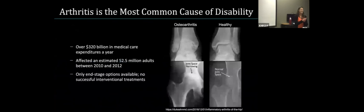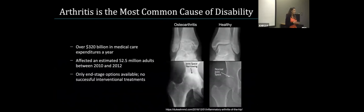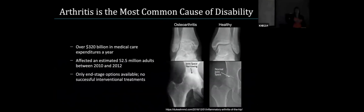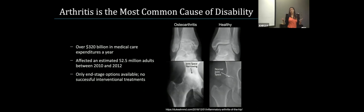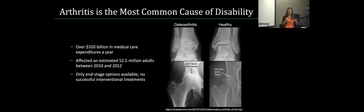We're going to overall talk about OA. Just a little background on osteoarthritis: arthritis is the number one cause of disability in North America, representing a huge socioeconomic burden. A lot of what I want to highlight is that there are only end-stage options available and no interventional treatments. If you have a hip or knee replacement, you can have it revised, but in smaller joints such as in the hand, wrist, or foot and ankle, it's really hard to do a revision surgery because there's just not enough bone left.